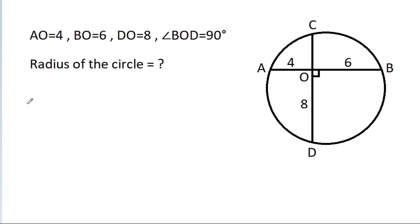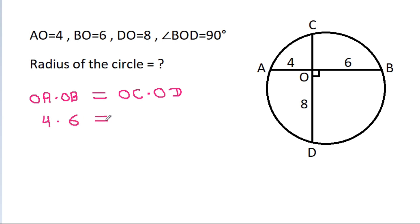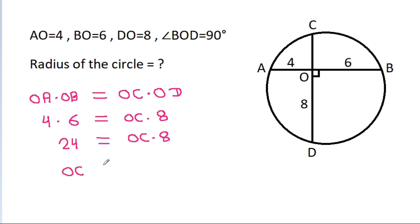So here, OA times OB equals OC times OD. OA is 4 and OB is 6, so 4 times 6 equals 24, and 24 equals OC times 8. So OC equals 24 divided by 8, which is 3. So OC is 3.